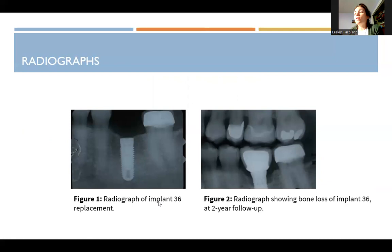This is a radiograph of an implant replacing tooth number 36 using a different numbering scale. The follow-up radiograph shows dramatic bone loss around the implant — you can see the threads exposed all the way down. This would catch your attention because something is significantly affecting that implant.